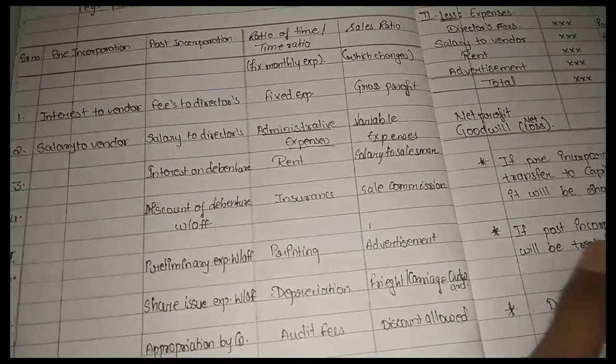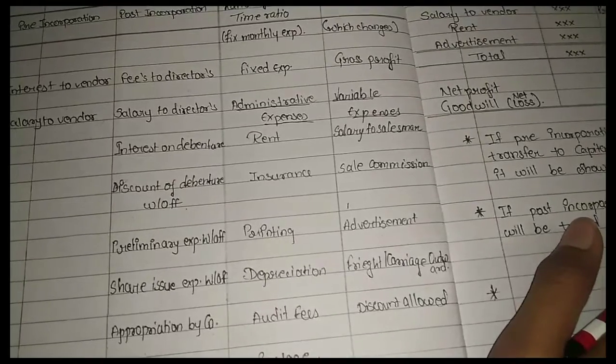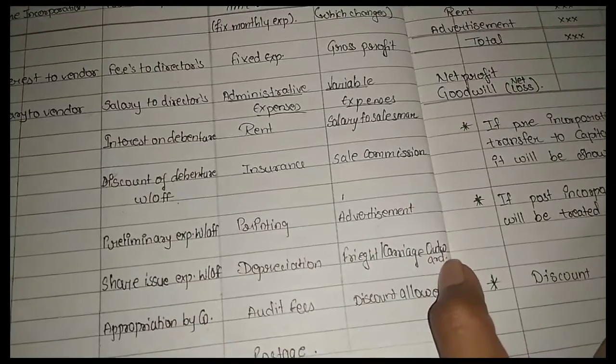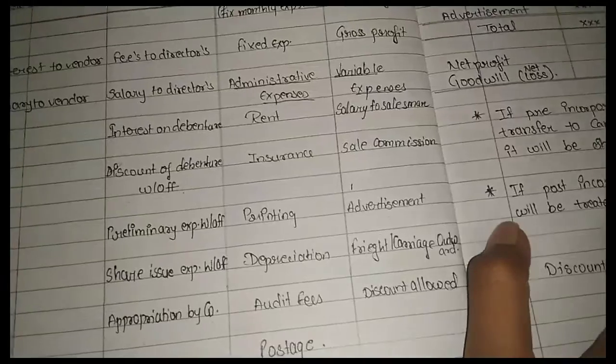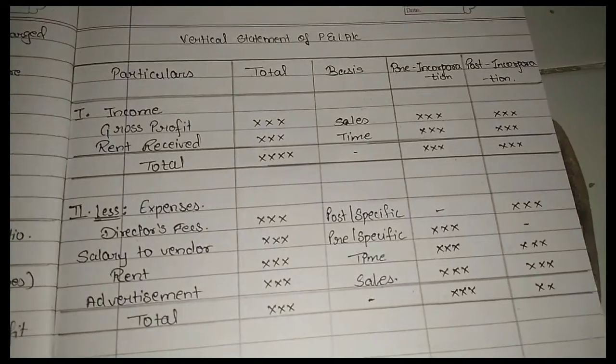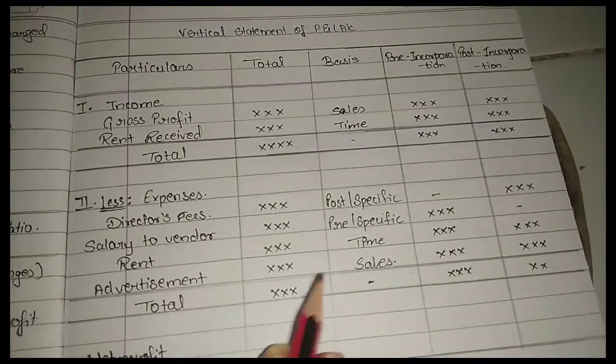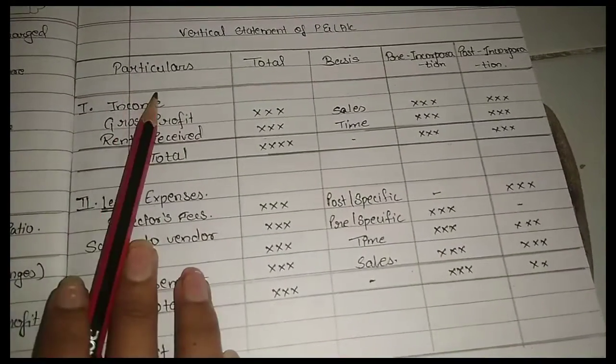Sales ratio, which can change. Gross profit: in gross profit we have sales, commission, advertisement, cash discount, discount allowed, sales.